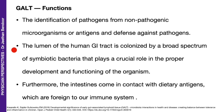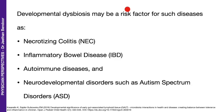The lumen of the human GI tract is colonized by a broad spectrum of symbiotic bacteria that plays a crucial role in the proper development and functioning of the organism, so it's important to keep symbiotic bacteria happy and healthy — to recognize them and not kill them. Furthermore, the intestine comes in contact with dietary antigens — the food that we eat — which are foreign to our immune system, so we need to have balance there as well. Developmental dysbiosis may be a risk factor for many diseases, including necrotizing colitis, inflammatory bowel disease, autoimmune diseases of all kinds, as well as neurodevelopmental diseases such as autism spectrum disorder.